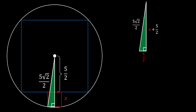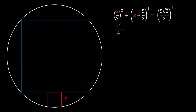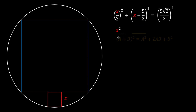Using the Pythagorean theorem: (x/2)² + (x + 5/2)² = (5√2/2)². The first term gives x²/4. For the second term, applying the binomial square formula (a + b)² = a² + 2ab + b², we get x² + 5x + 25/4. The right side equals 50/4.